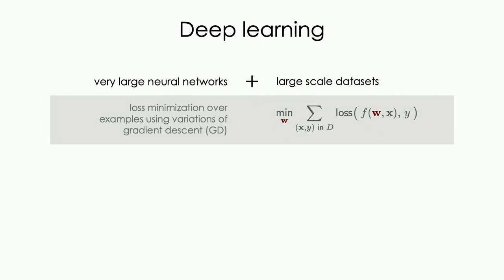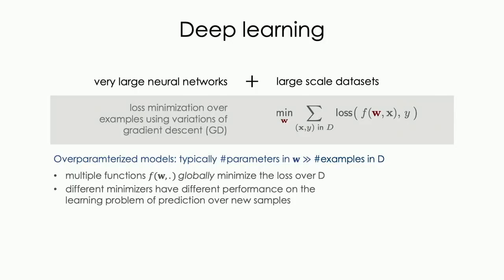We've heard enough deep learning talks to know that deep networks used in practice work in a large network trained on very large-scale datasets. A key component of many deep learning models is some form of loss minimization using some variance of gradient descent. You have the empirical loss over datasets, and you essentially do stochastic gradient descent on this empirical loss to get the final solution.